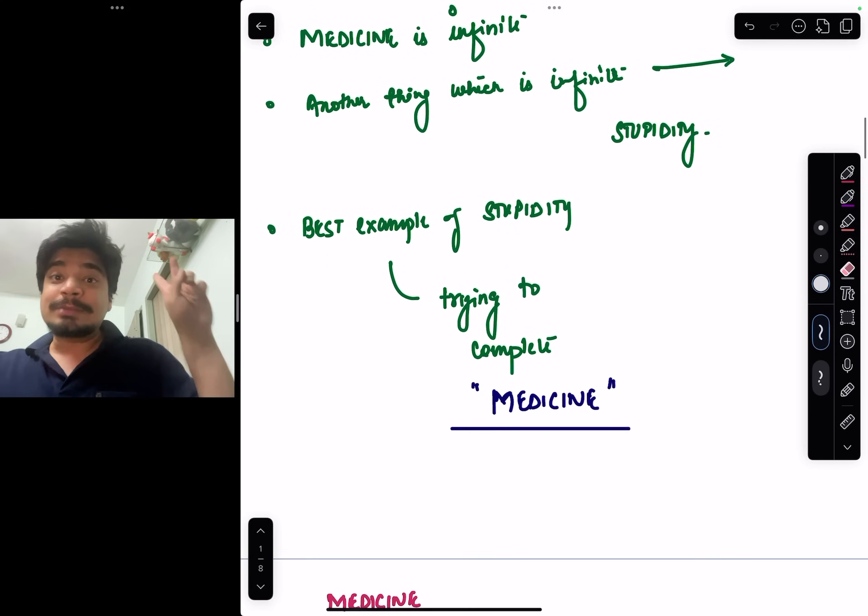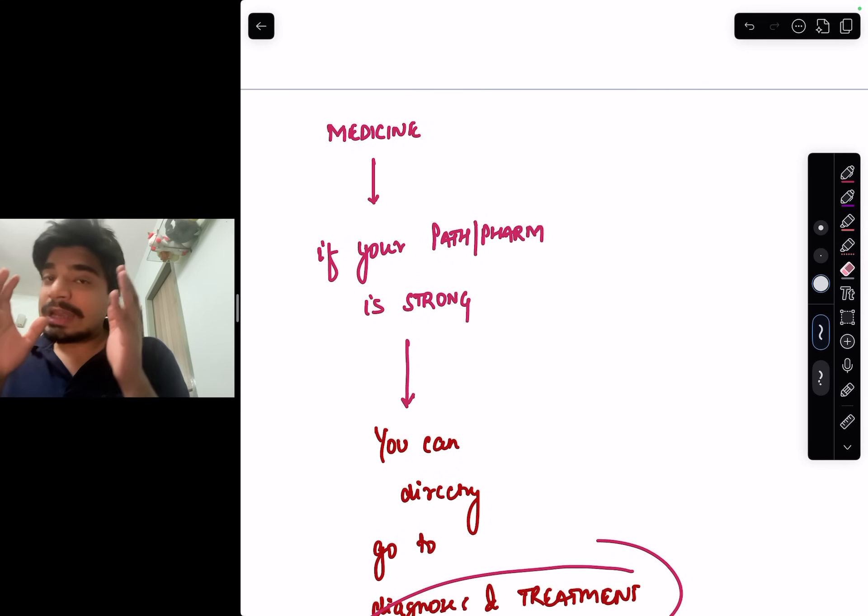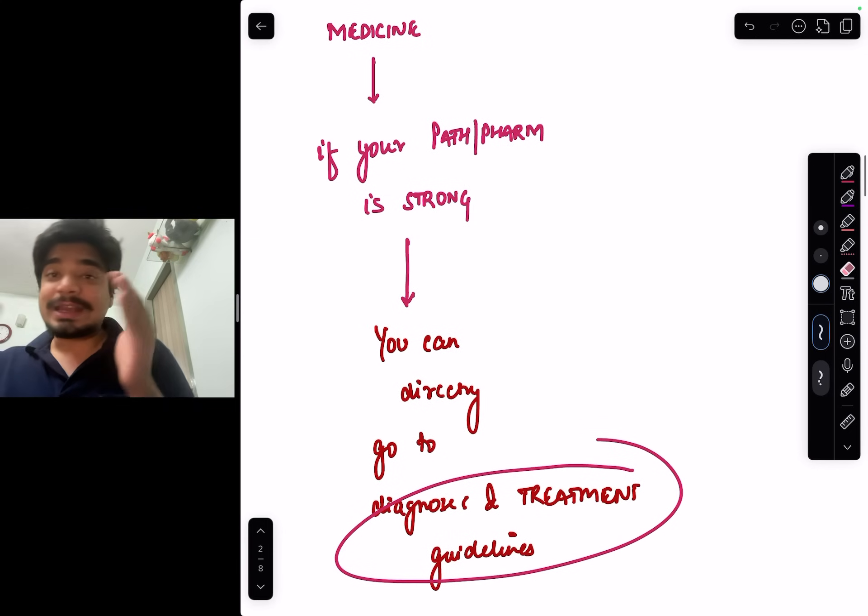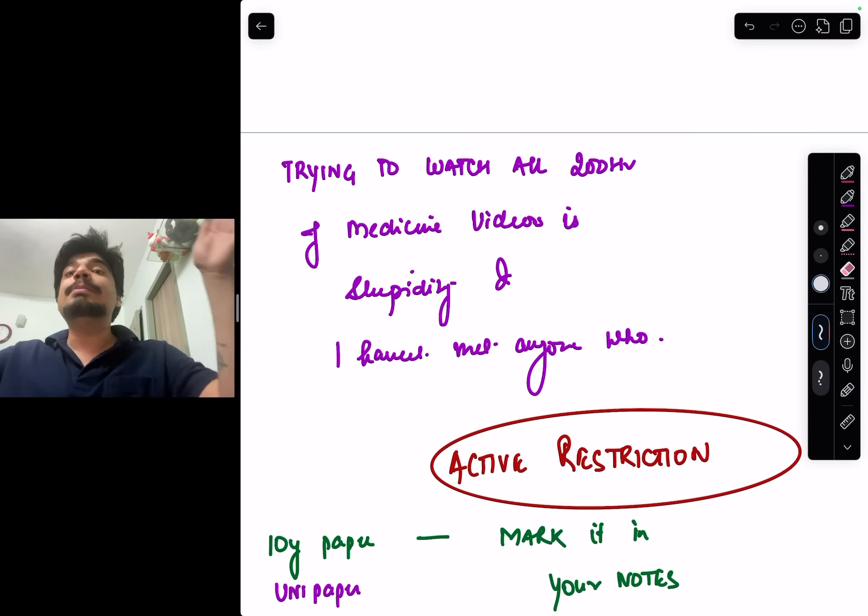If your path pharma is strong, you can directly skip to diagnosis and treatment guidelines. You don't need to watch 200 hours of videos. You can just focus on those videos or those parts of videos which are focusing on treatment and guidelines. The only way to complete infinite medicine is an active restriction of topics that you're going to do.